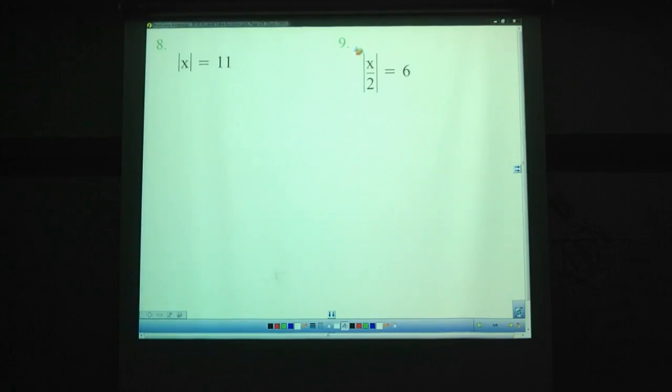Number 8. Absolute value of x equals 11. See if you can find both answers for x. And hopefully you said x is equal to 11 or negative 11. So that's how you do that. There's two different numbers that have the value of 11. 11 and negative 11. Try out this one here where it's x being divided by 2. Pause the video.